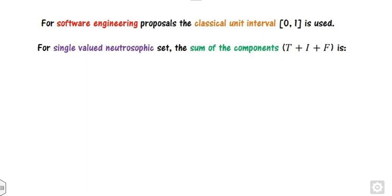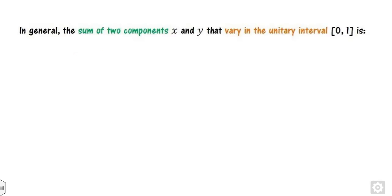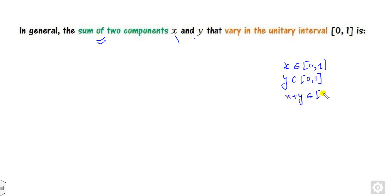The question arises: if all these values lie between 0 and 1, what will be their sum? The sum can be less than 3, less than 4, less than 1, or less than 2 — it depends on how you define them. They are defined based on the degree of dependency and independency. We know that if we find the sum of two components x and y over the interval [0,1], x plus y can lie between 0 and 1 or be greater than 1.